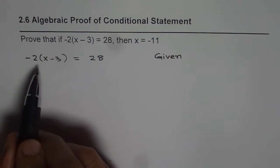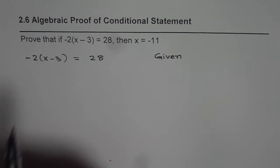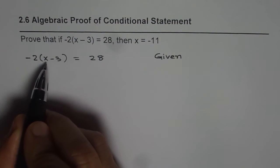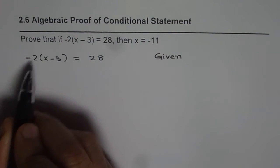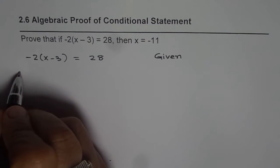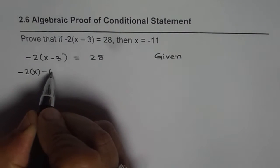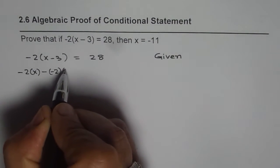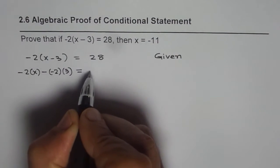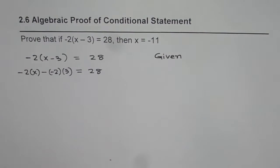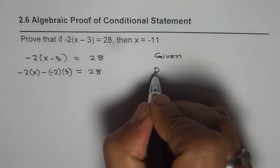Now we can apply the distributive property. We will multiply the terms inside the bracket by -2. So we get -2x - (-2)(3) = 28. This is distributive property, so the reason is distributive property.